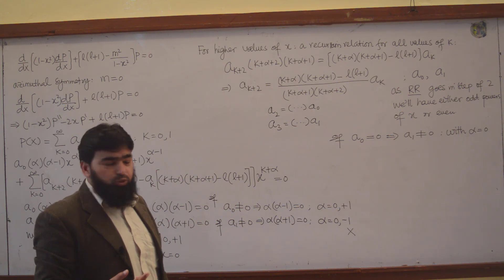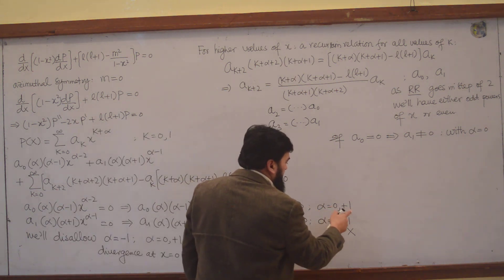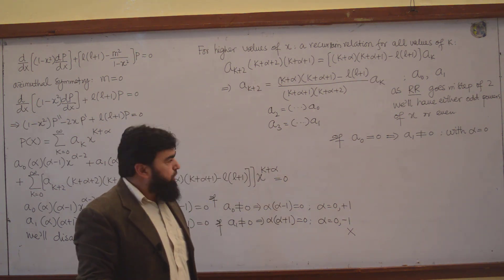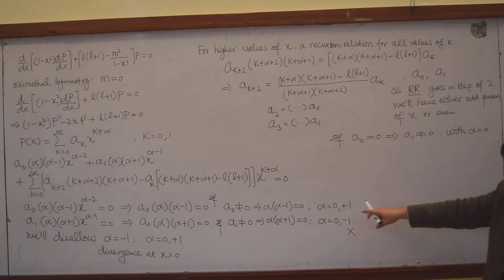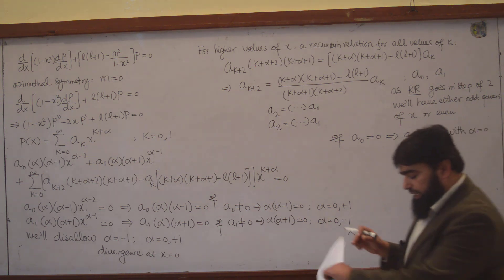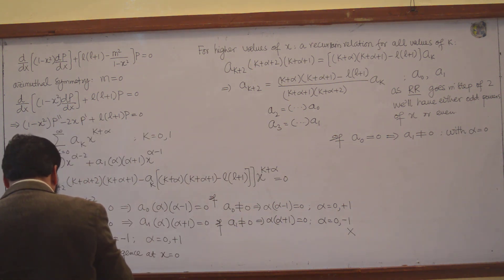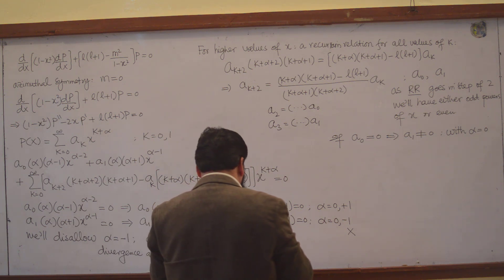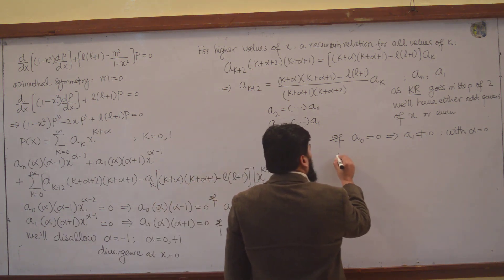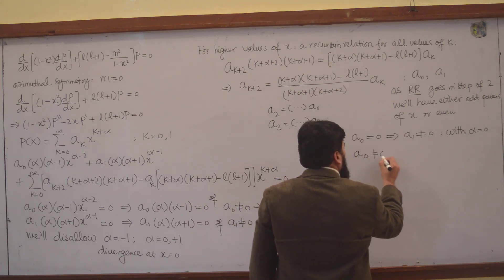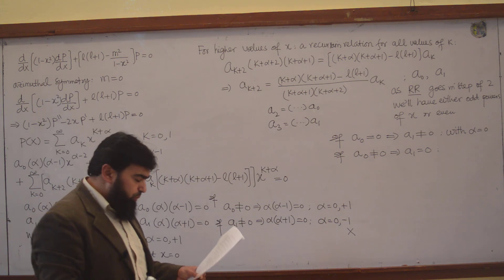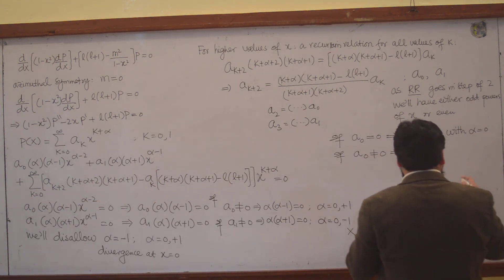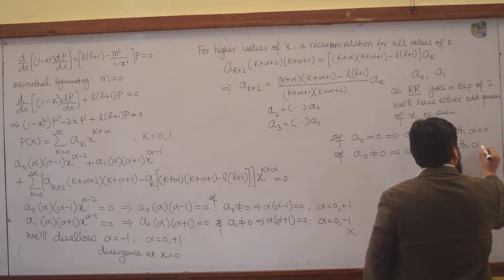Alpha possesses two values: alpha is either 0 or 1. If I take this situation, I will check with alpha equal to 0 and the same situation with alpha equal to 1 as well, because those are both possibilities — these are the two roots. So another possible situation is: if a₀ is non-zero, then this implies a₁ should be 0.